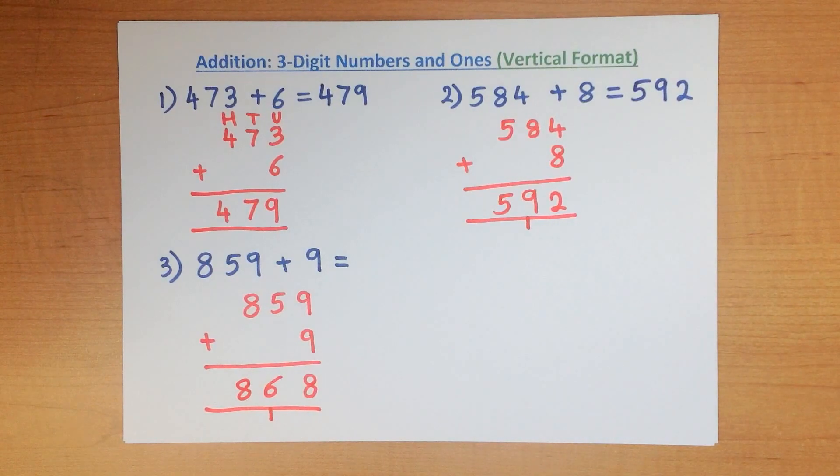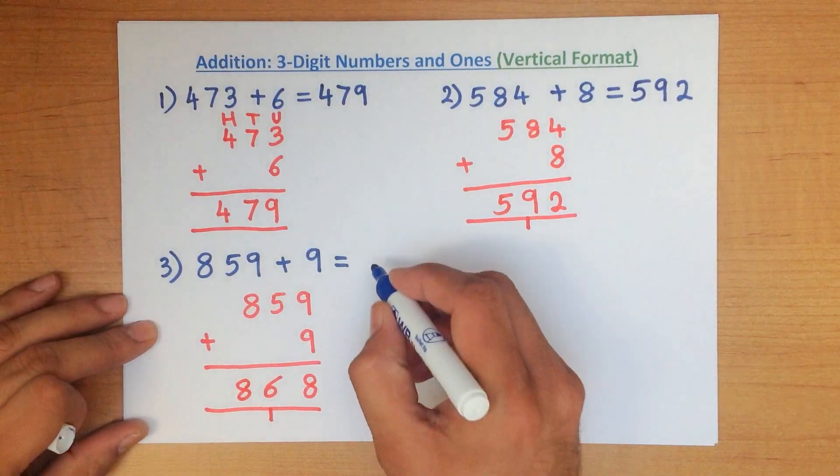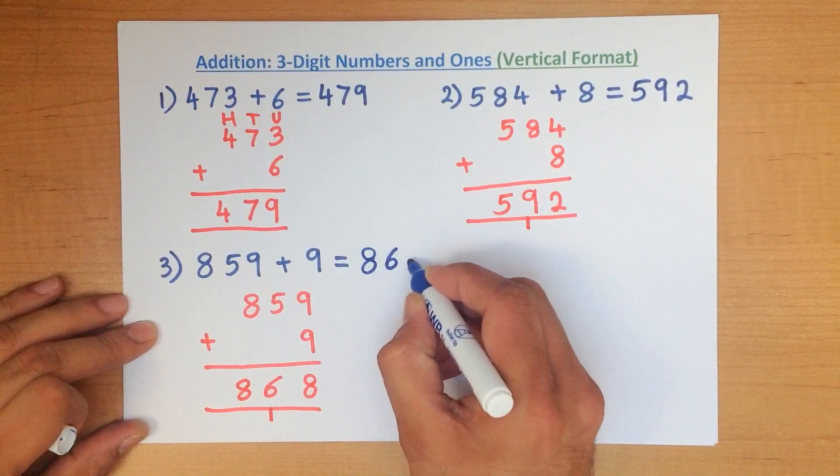859 plus 9 is 868. And we have our answer, 868.